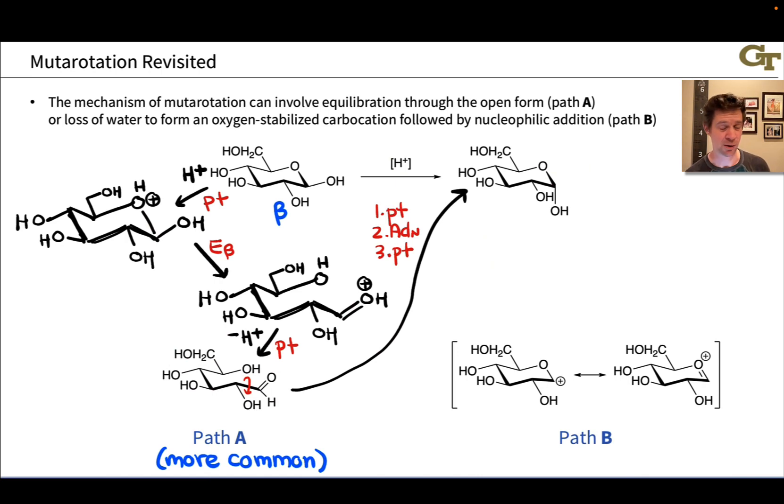In some cases, however, and with certain types of nucleophiles that are not necessarily water, we can get a mechanism via a positively charged oxygen stabilized carbocation intermediate. And the idea here is we protonate not the oxygen in the ring, but the oxygen out here. And after beta elimination of water via loss of water from the anomeric carbon, the anomeric hydroxyl group gets protonated and then departs.